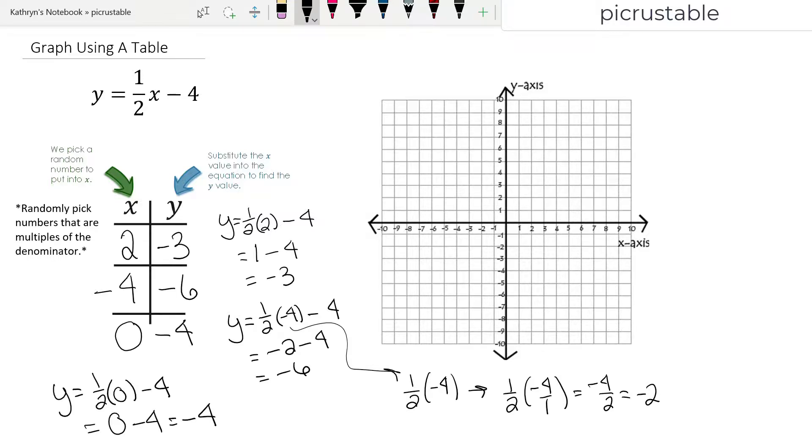And now let's graph it. We have 2 negative 3 as our first ordered pair. So we're going to go to 2 on the x and down 3 on the y. Perfect. Our next ordered pair is negative 4, negative 6. So I'm going to go to negative 4 on the x and then down to negative 6 on the y.